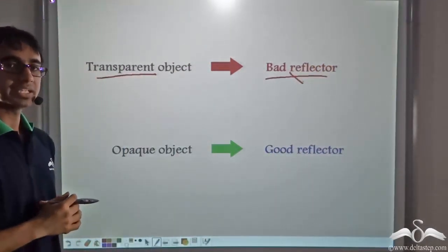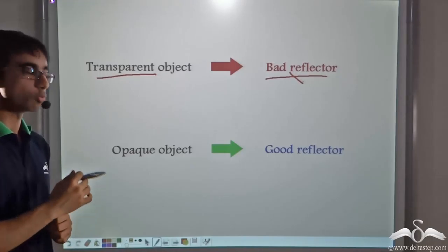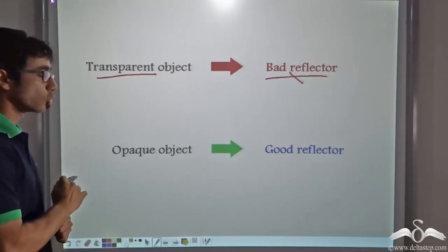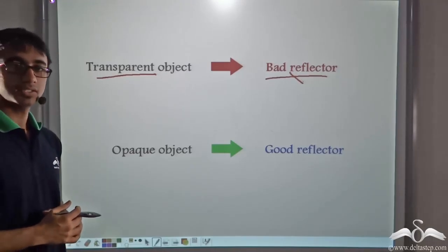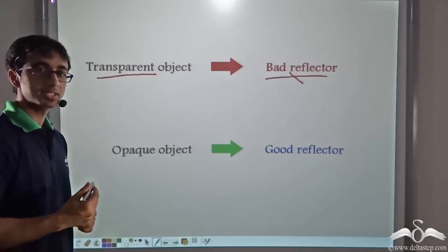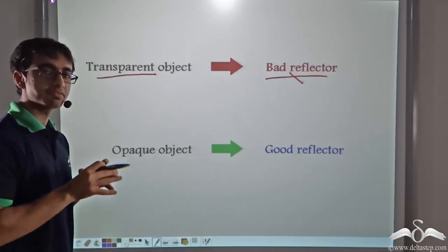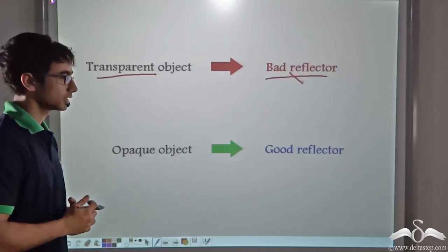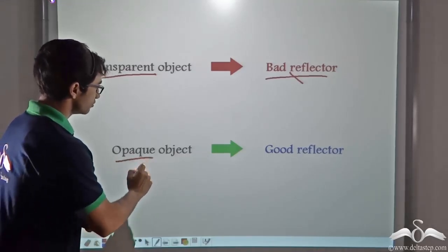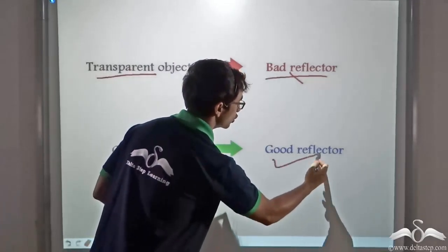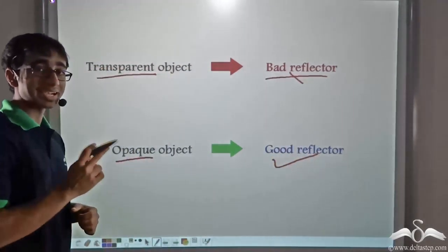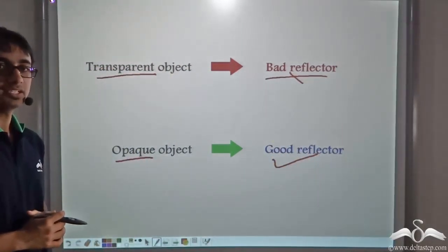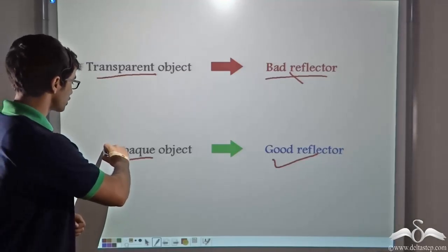Now what do you think will take place when we consider an opaque object? An opaque object will obviously not let light pass through it. So all the light falling on the opaque object will be reflected. So an opaque object is a good reflector. So the second criterion that is fulfilled is the object must be opaque.